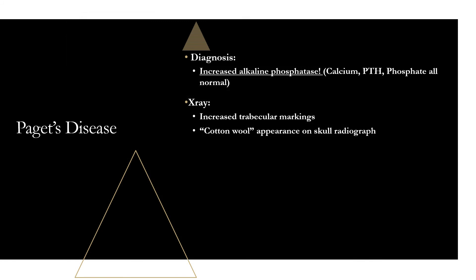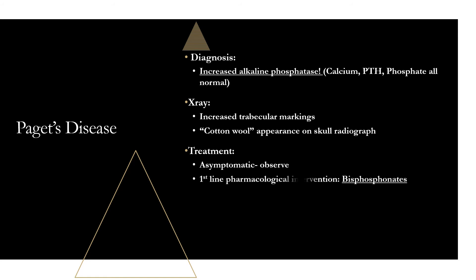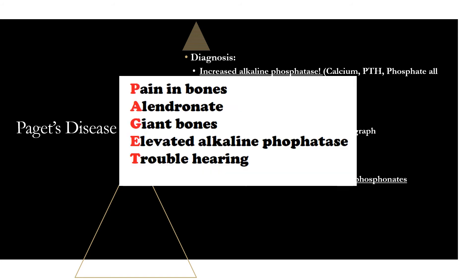As far as treatment: if they're asymptomatic, just observe. If treatment is needed, the first-line agent is bisphosphonates — such as alendronate. So for diagnosis, look for increased alkaline phosphatase and consider imaging; for treatment, use bisphosphonates.